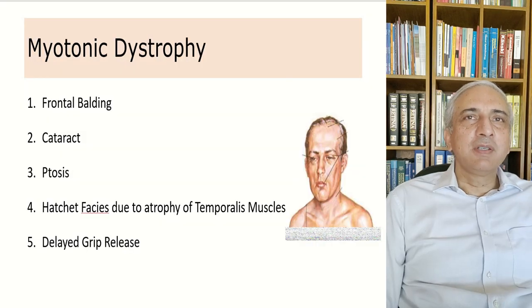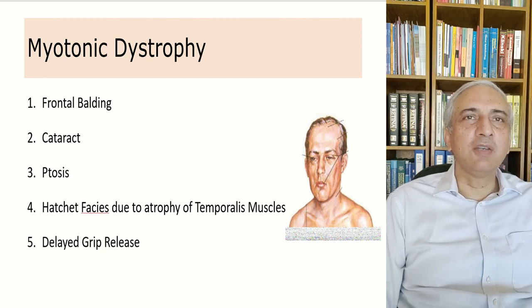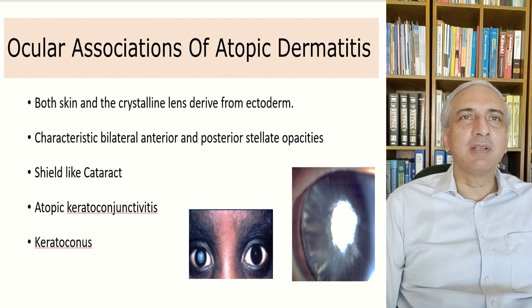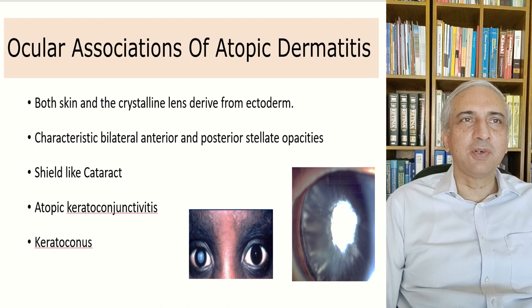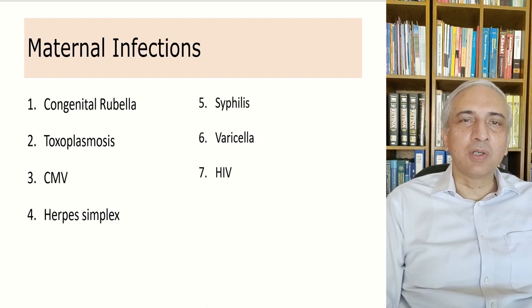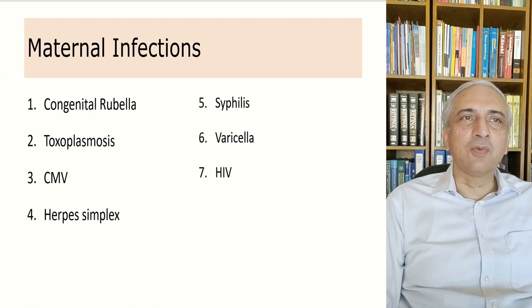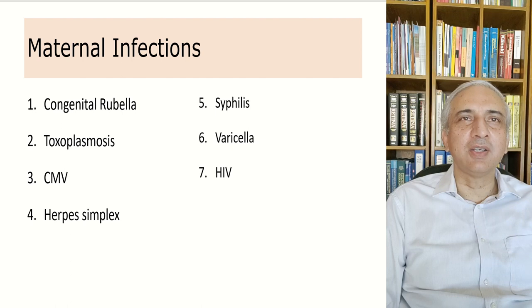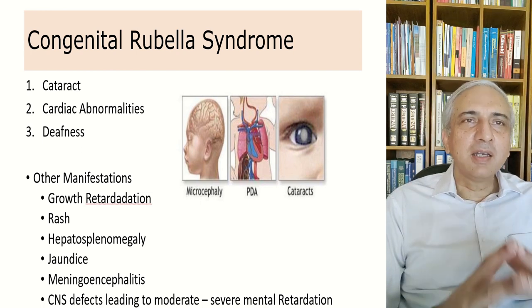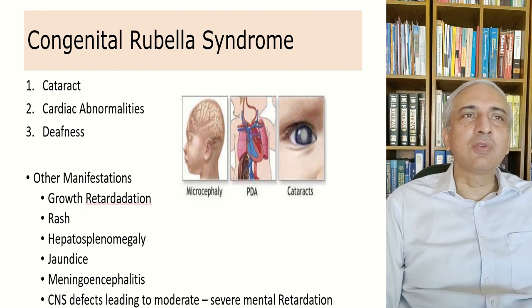Hereditary retinal diseases — including retinitis pigmentosa, Leber's congenital amaurosis, gyrate atrophy, Stickler syndrome, and Wagner's syndrome — characteristically produce posterior subcapsular cataracts. Myotonic dystrophy produces frontal balding, cataract, hatchet face due to atrophy of the temporal muscles, and delayed grip release. Atopic dermatitis is associated with cataract because both skin and the crystalline lens are derived from the ectoderm, producing characteristic bilateral anterior and posterior stellate opacities, as well as atopic keratoconjunctivitis and keratoconus from constant eye rubbing. Maternal infections causing cataract include congenital rubella, toxoplasmosis, CMV, herpes simplex, syphilis, varicella, and HIV. Congenital rubella syndrome has a triad of cataract, cardiac abnormalities, and deafness, with other manifestations including growth retardation, rash, hepatosplenomegaly, jaundice, and meningoencephalitis.